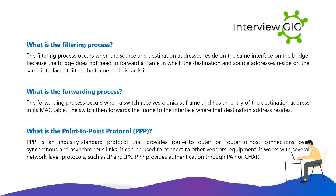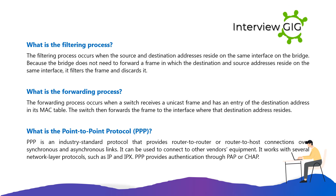What is the forwarding process? The forwarding process occurs when the switch receives a unicast frame and has an entry for the destination address in its MAC table. The switch then forwards the frame to the interface where that destination address resides. What is the Point-to-Point Protocol (PPP)?